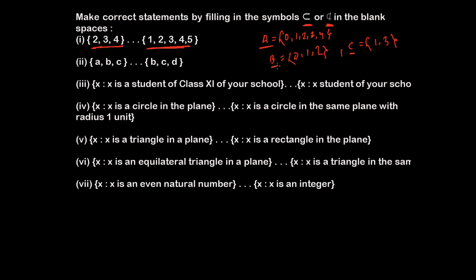B is a set I created from the elements of set A. Similarly, C is a set created from the elements of set A. All the elements of B — that is 0, 1, and 2 — are inside set A. Similarly, all the elements of C — 1 and 3 — are inside set A. So I can say that set B and set C are subsets of A, and I will write B ⊆ A and C ⊆ A.